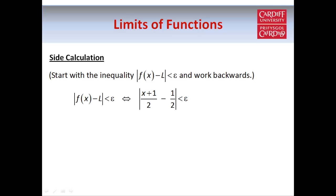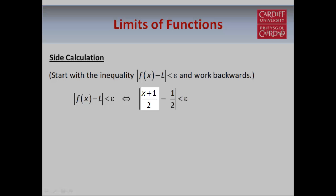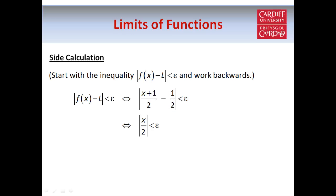So if we write down the inequality |f(x) - L| < ε, in our example this is equivalent to saying |((x+1)/2) - (1/2)| < ε. Here's our function f(x), and here's the limit L which we're trying to prove. If you simplify that, that's just saying |x/2| < ε, which tells us |x| must be smaller than 2ε.